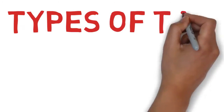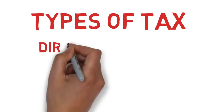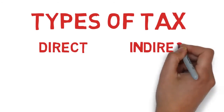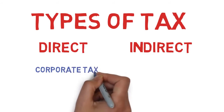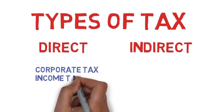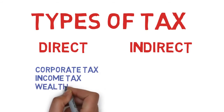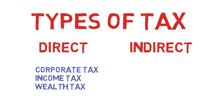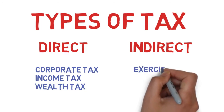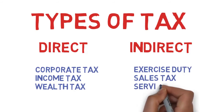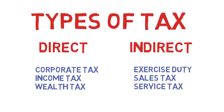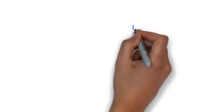There are actually two types of taxes. One is direct tax and the other is indirect. The direct tax is one whose liability cannot be shifted to someone else, like corporate tax, income tax, wealth tax, etc. But indirect tax is the tax whose liability can be shifted to someone else — it includes central excise tax, sales tax, services tax, etc. Here the point of interest is indirect taxes.